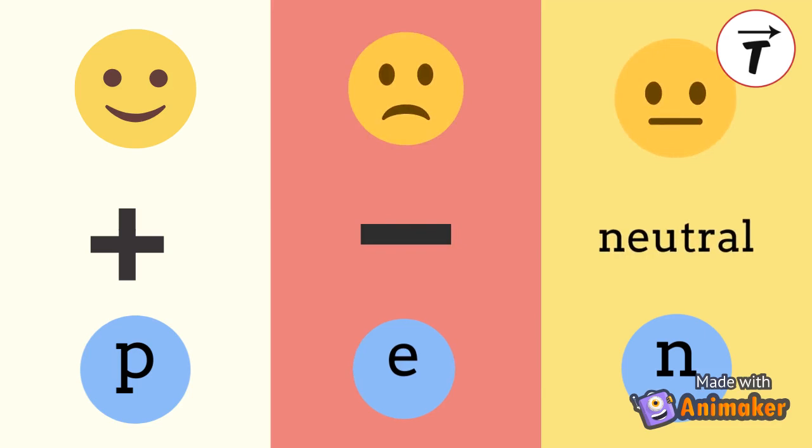In most atoms, there are as many electrons as protons, so there is no net charge. That's why most objects around us are non-electrified.